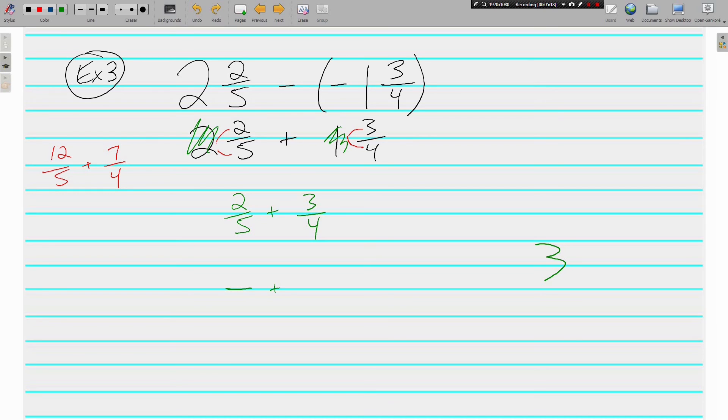Anyway, common denominator is 20. This is times 4. 5 times 4 is 20. So 2 times 4 is 8. And 4 times 5 gets us 20. So 3 times 5 is 15.